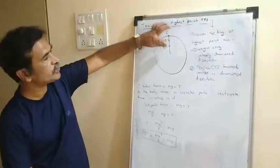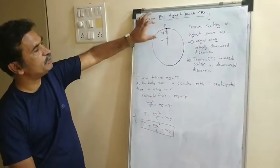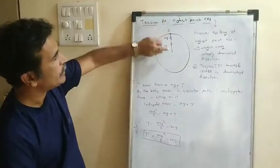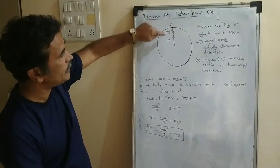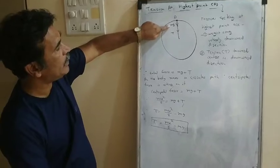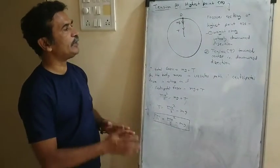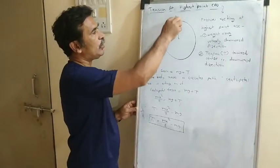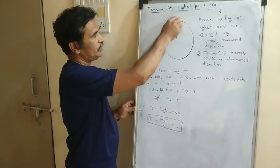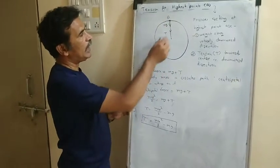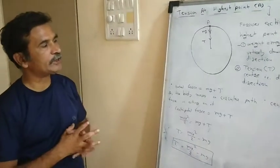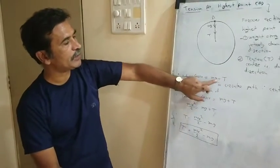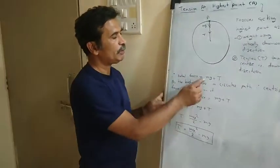At the highest point, both forces — tension T and weight mg — are directed in the same direction (vertically downward). So the resultant force acting on the body at the highest point is the addition of both forces: mg + T.